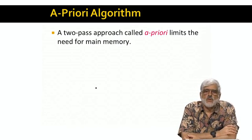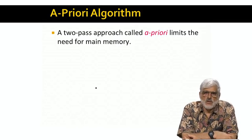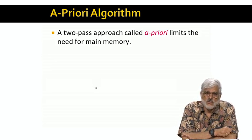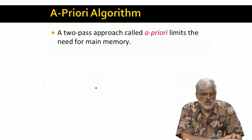We can think of the A-Priori algorithm as a two-pass algorithm, since that is what it needs to find frequent pairs. But as we just said, if you want to go past pairs to larger itemsets, then you need k passes to find frequent itemsets of size up to k.